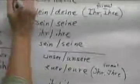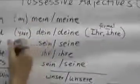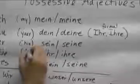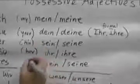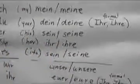Possessive adjectives. Mein, meine means obviously my. Dein, deine means your. Sein is his. Ihr is her. Sein is its.